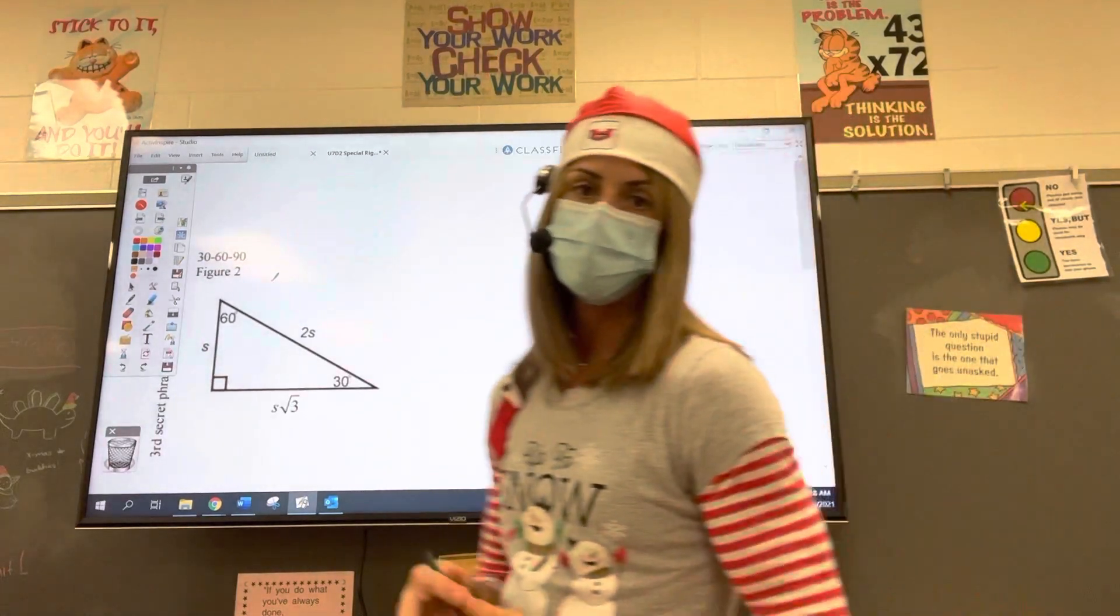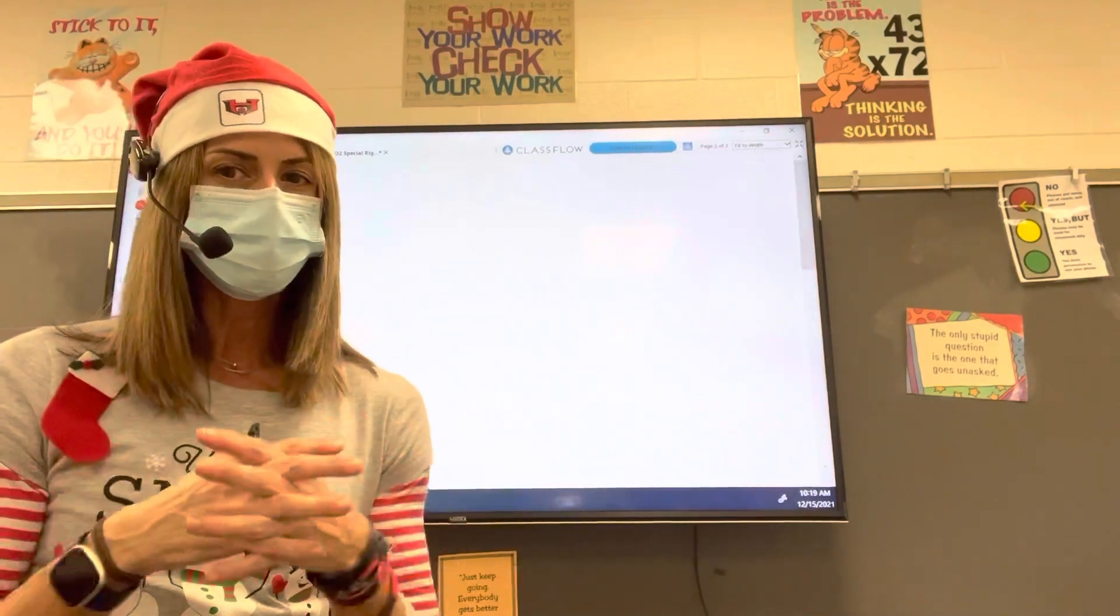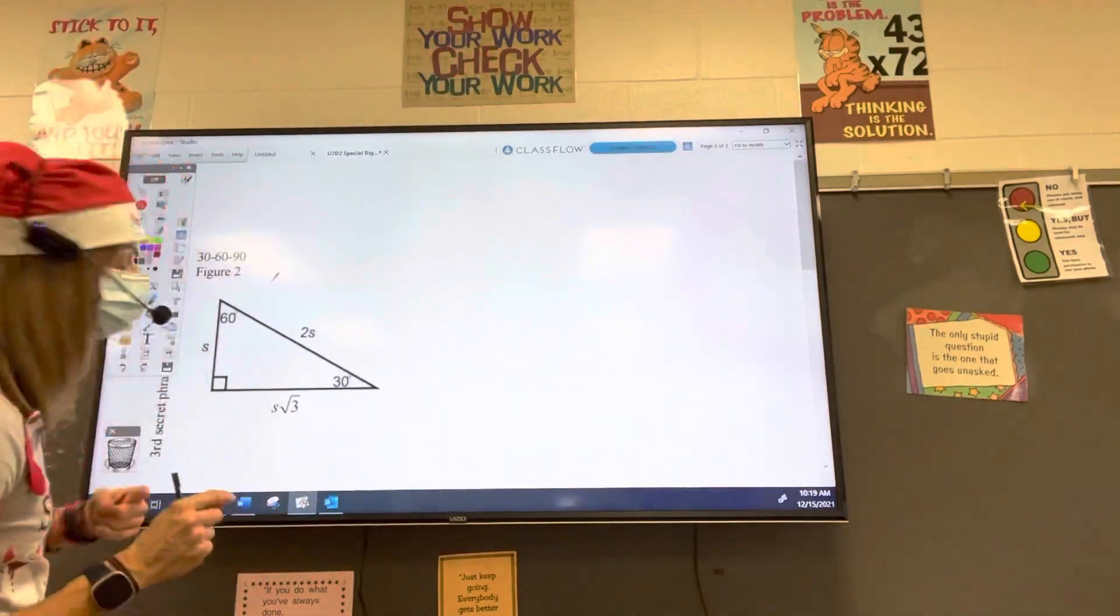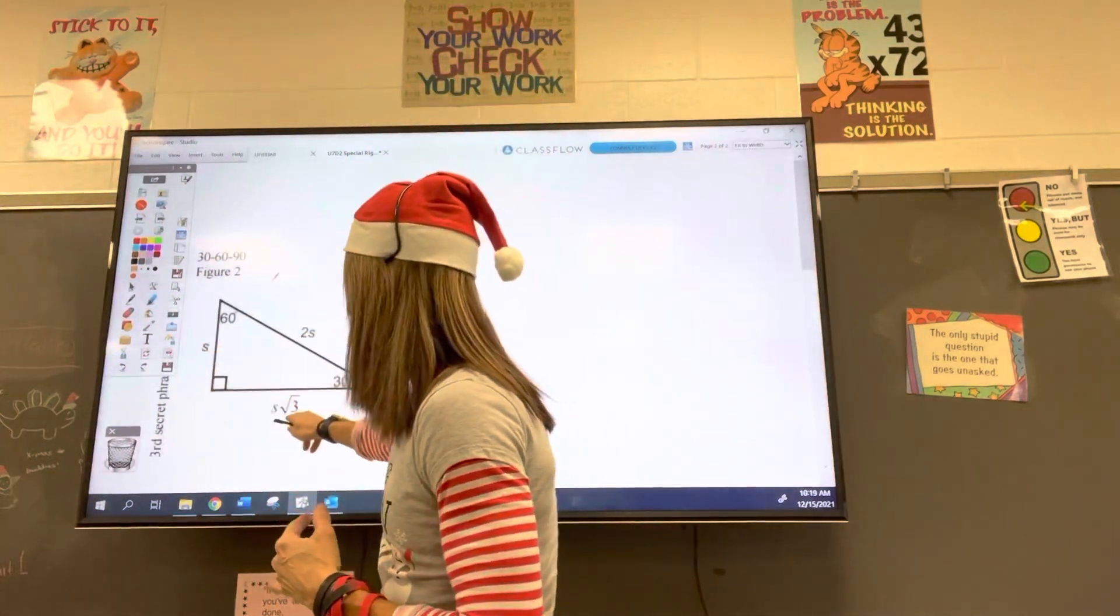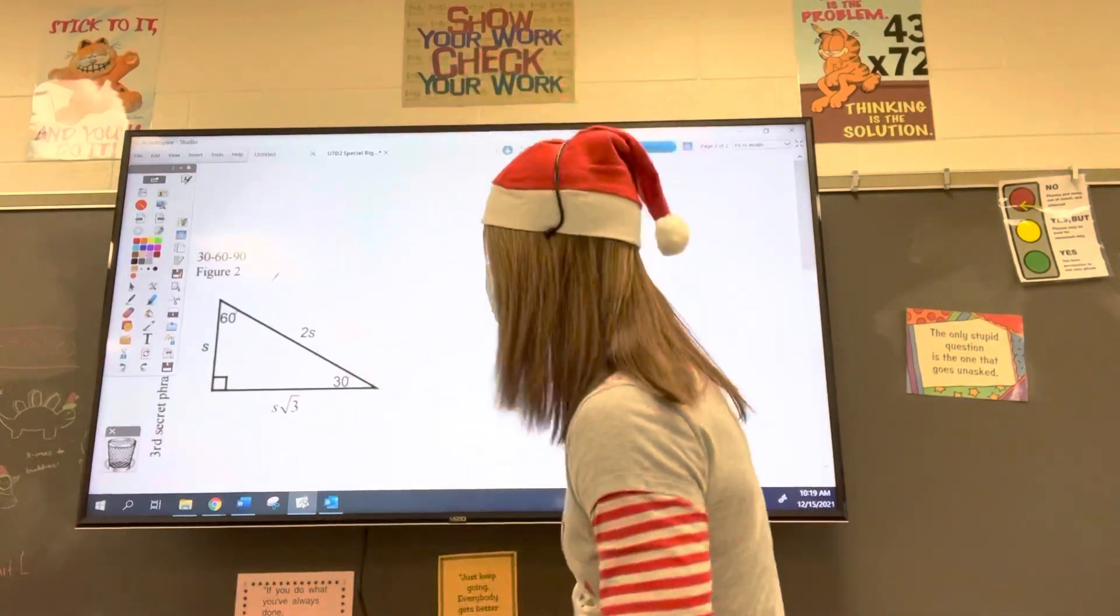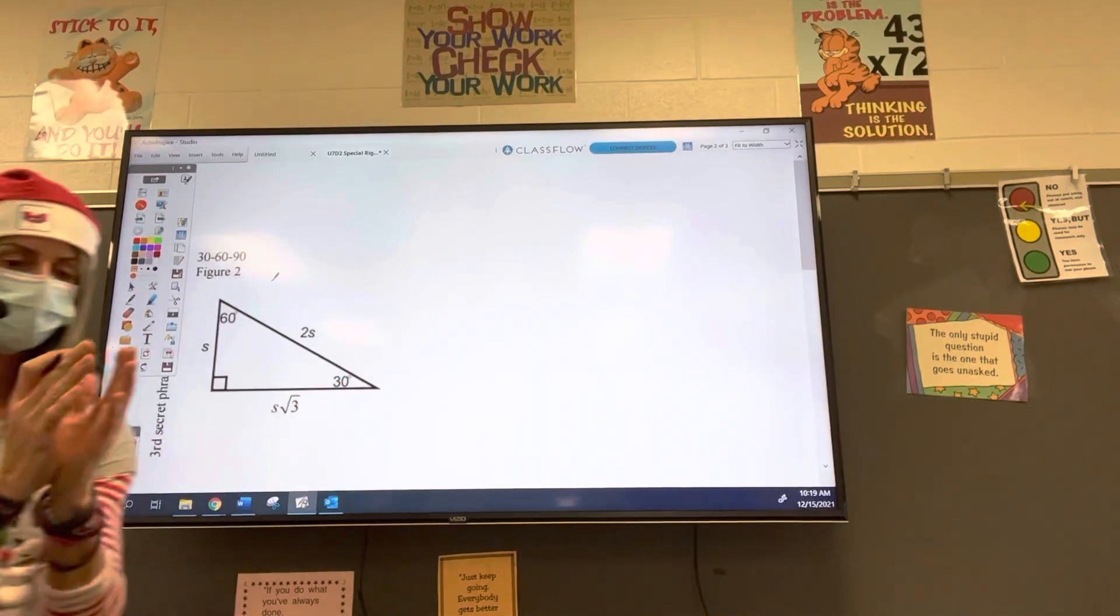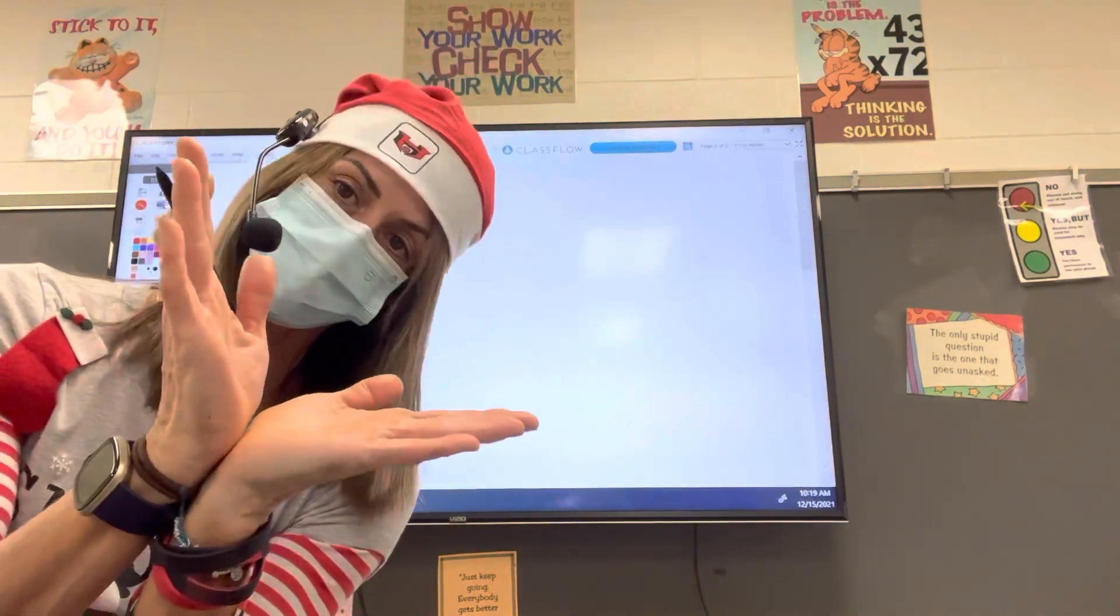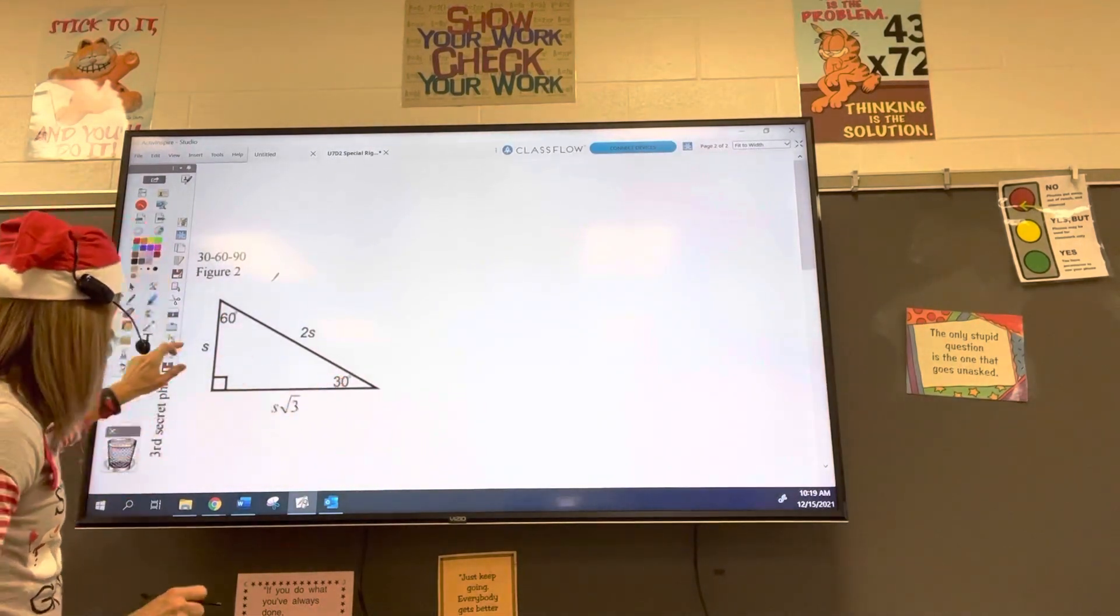The second type of special right triangle is a 30-60-90 triangle. And the relationship, it's a little bit more complicated because the lengths of the sides aren't the same. So there's two relationships we have to memorize. The first one is everything revolves around the length of the short side. We have a short side now, and we have a long side, and we also have a hypotenuse. Hypotenuse is always across from the right angle. The short side is across from the 30-degree angle because, as we know,